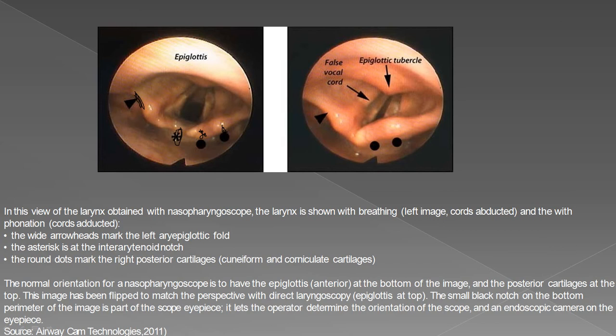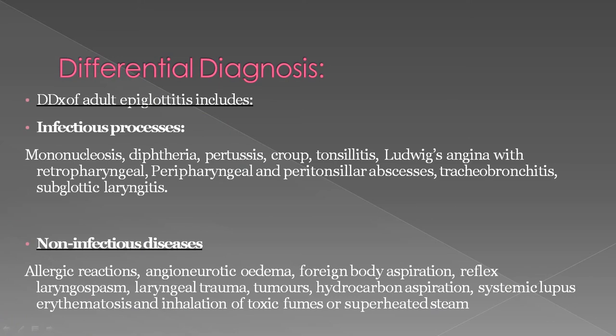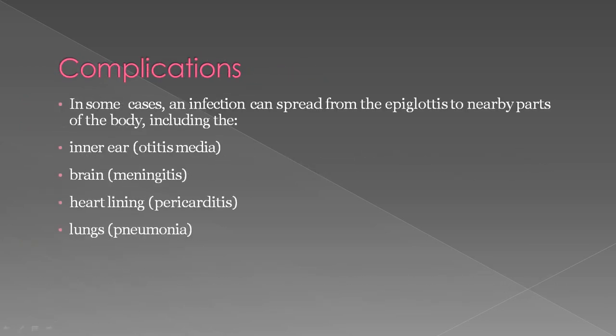The differential diagnosis of adult epiglottitis includes infectious processes such as mononucleosis, diphtheria, pertussis, croup, tonsillitis, Ludwig's angina, retropharyngeal, peripharyngeal, and peritonsillar abscesses, tracheobronchitis, and subglottic laryngitis. Non-infectious causes include allergic reactions, angioneurotic edema, foreign body aspiration, reflex laryngospasm, laryngeal trauma, tumors, hydrocarbon aspiration, systemic lupus erythematosus, and exposure to toxic fumes or superheated steam.